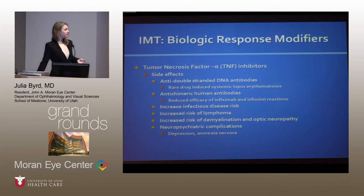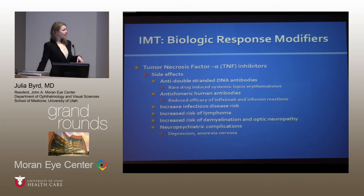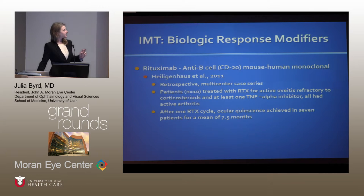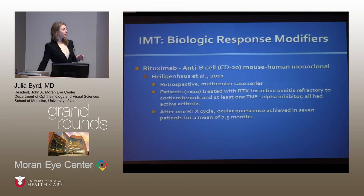With all of these medications there is an increased risk of infectious disease, increased risk of lymphoma, and importantly an increased risk of demyelination and optic neuropathy. So if you are ever treating someone with intermediate uveitis or pars planitis, make sure they do not have multiple sclerosis — it is a contraindication, and using these medications with MS can cause neuropsychiatric complications. Rituximab is another biologic response modifier — an anti-B cell chimeric human monoclonal antibody. A small case series showed some ocular quiescence with rituximab in refractory uveitis, but the sample sizes are small, as with a lot of these studies.